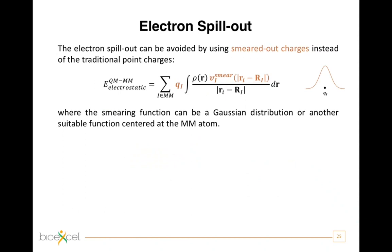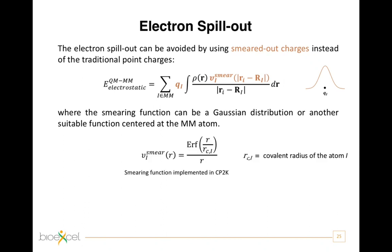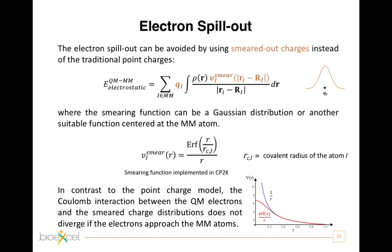This artifact can be avoided by modeling classical charges as smeared-out charges instead of traditional point charges, where the smearing function can be a Gaussian distribution or another suitable function centered on the MM atom. The smearing function used in CP2K is shown here. This is the exact potential energy function generated by a Gaussian charge distribution. In contrast to the point-charge model, the Coulomb interaction between the electrons and the smeared charge distribution does not diverge if the electrons approach the MM atoms, as you can see in the plot sketched here.